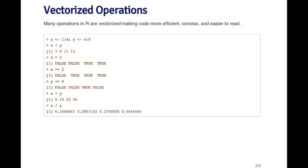you can just use the plus on the two vectors, and it will add them together. So x plus y does what you would expect. It adds one to six, two to seven, three to eight, and four to nine. So you get the vector seven, nine, eleven, thirteen.